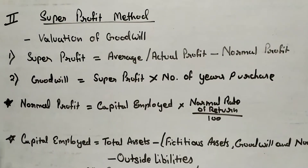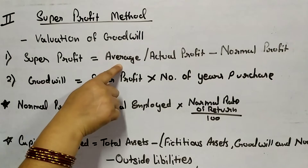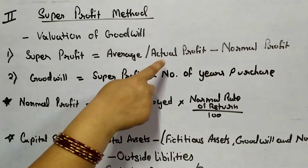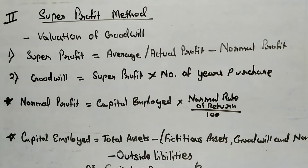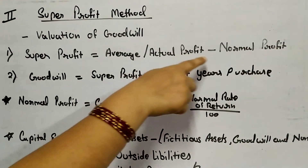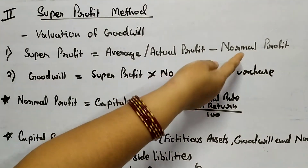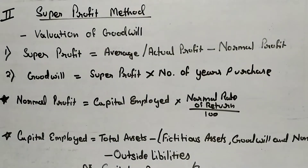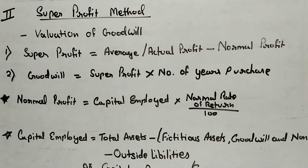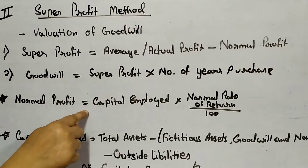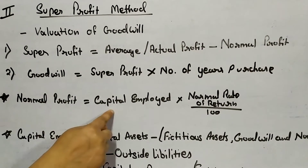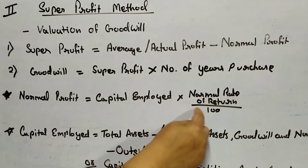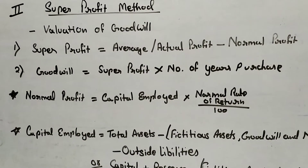In the previous class, we already discussed how to calculate average profit. Today we discuss about the calculation of normal profit. Normal profit is equal to capital employed multiplied by normal rate of return divided by 100.